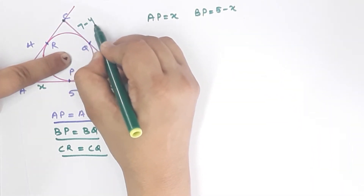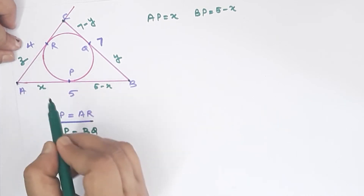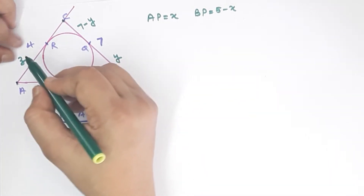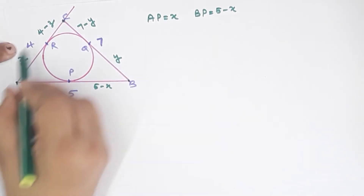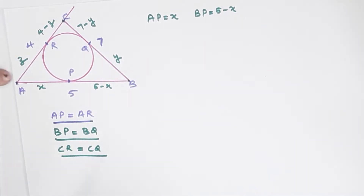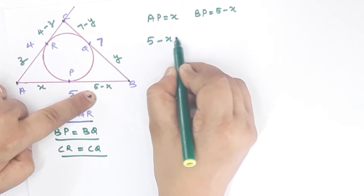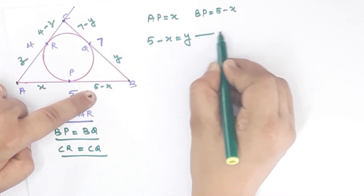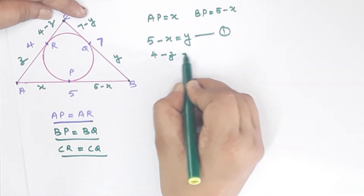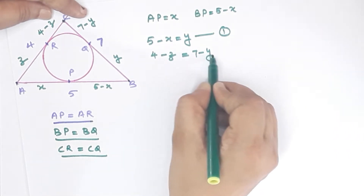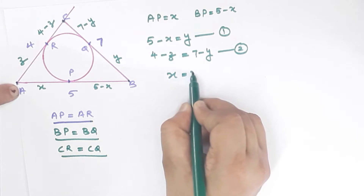Setting up our variables: x, y, and z for the tangent lengths. Now we make the relations. Equation 1: 5 minus x equals y. Equation 2: 4 minus z equals 7 minus y. Equation 3: x equals z.